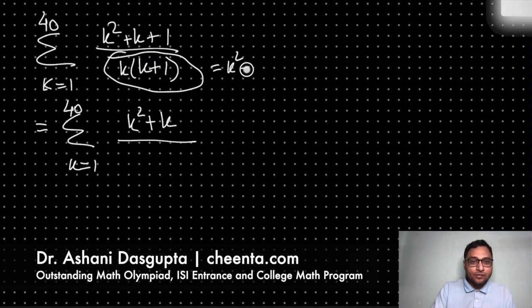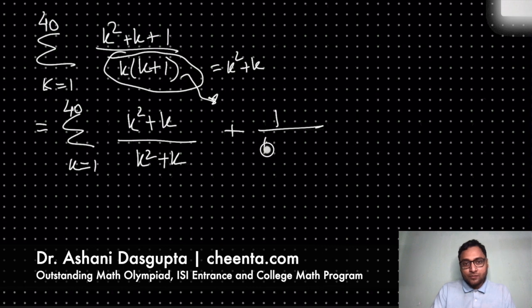So this is (k squared plus k) divided by this denominator, which is also k(k+1) or k squared plus k. So this is (k squared plus k)/(k squared plus k) plus 1 over k into (k+1). It's also k squared plus k but for our convenience we'll keep this in this form, and this one of course becomes 1.